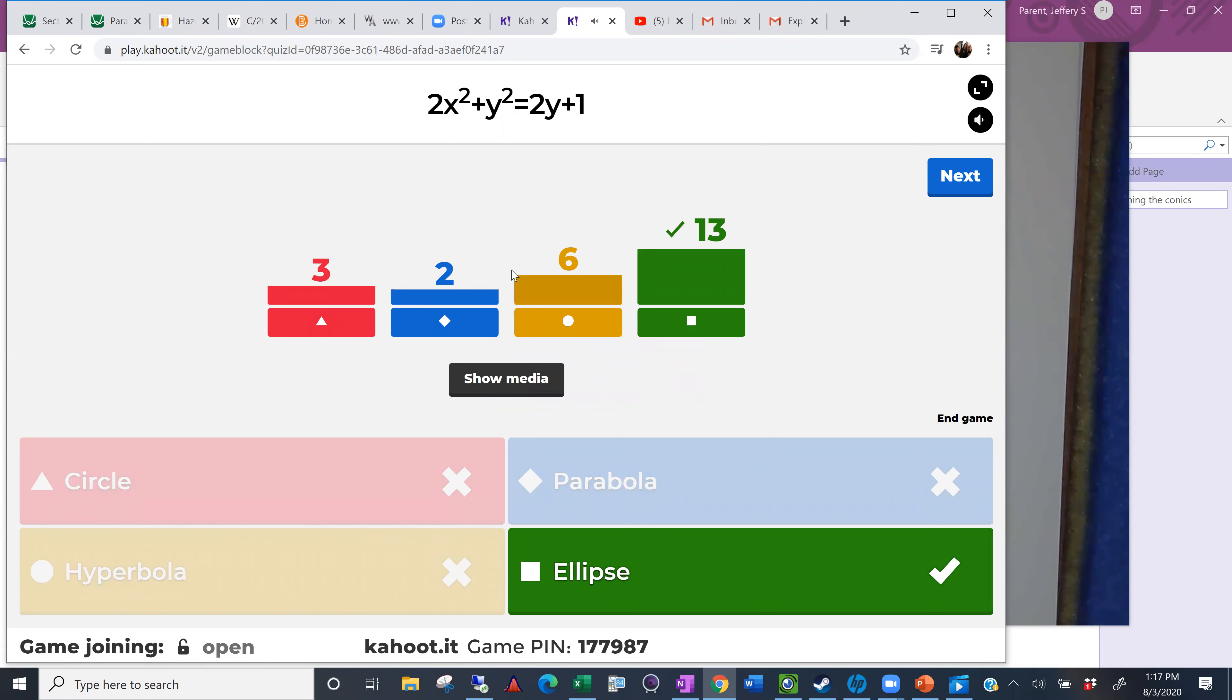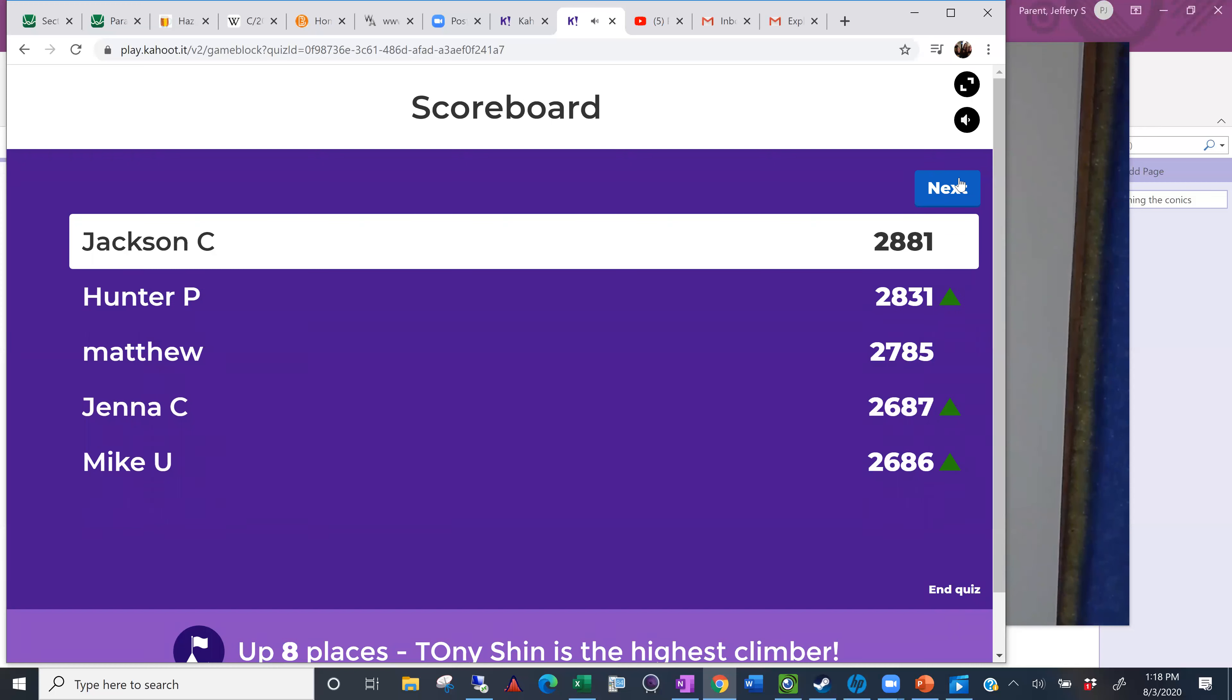Not as much certainty on this one as the last one. So, again, you've got two squared terms. That eliminates the parabola. It can't be a parabola. If it was a circle, both of these coefficients would be the same. So, it's not a circle. If it was a hyperbola, then these coefficients would have opposite signs. So, it's not a hyperbola. It's another ellipse. Who's left standing? Jackson. Still strutting it up in front. Well done. A couple new faces in our top five. And somebody who's using expletives dropped out of the top five.